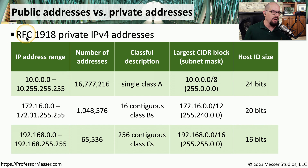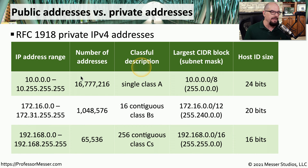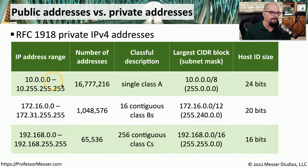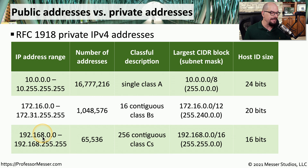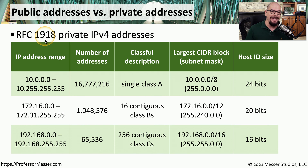This comes from RFC, or Request for Comment, number 1918, and it specifically defines what these private IP address ranges would be. This is a chart that includes the range, the number of addresses, the classful description, the subnet mask for the range, and the host ID size. But if you're planning to memorize any part of this, it's the first column that is most important. The first range is 10.0.0.0 through 10.255.255.255. The second range is 172.16.0.0 through 172.31.255.255. And the last private IP address range is 192.168.0.0 through 192.168.255.255. If your device's IP address falls in any of these ranges, you are using a private IP address, also called an RFC 1918 address.